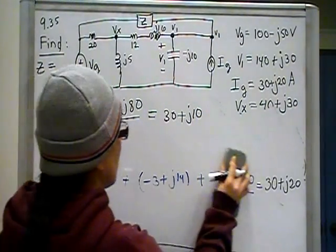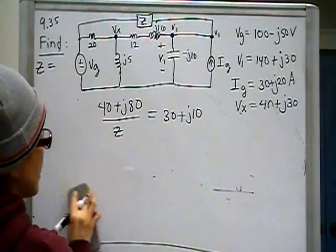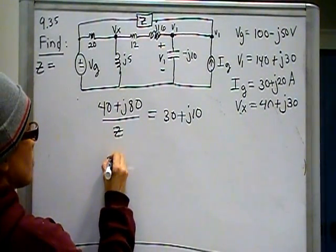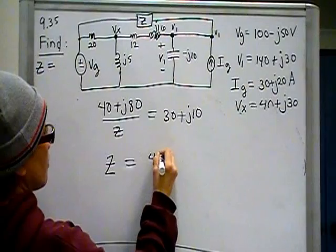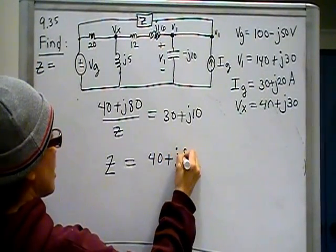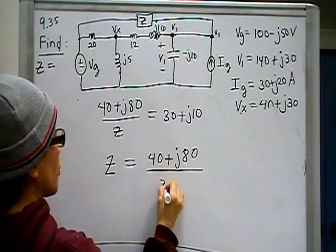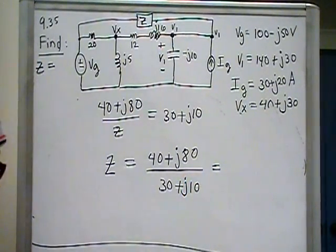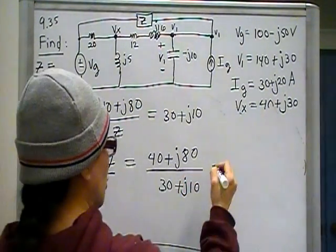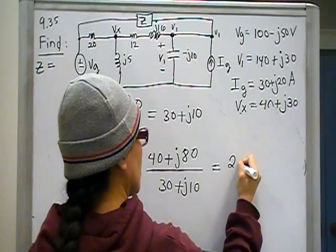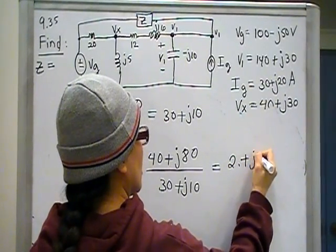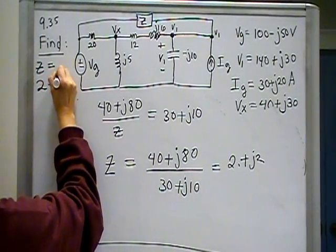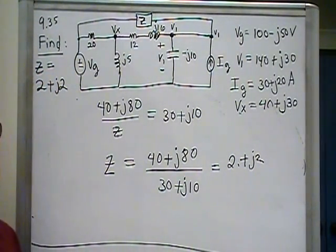Great. Now I have z down to a simple algebra equation that I can solve. z is just 40 plus j80 over 30 plus j10. And that, my friend, is 2 plus j2. So the impedance is 2 plus j2. And that's that.